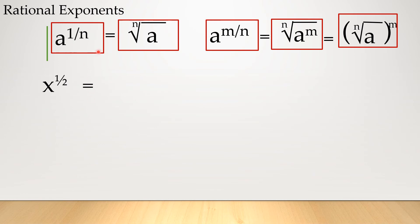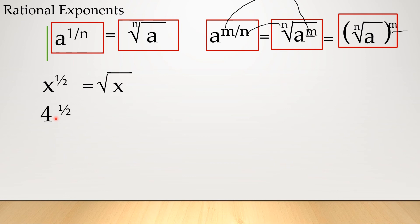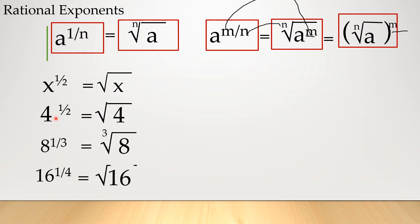So now let's look at examples. x raised to 1/2 is equal to the square root of x. 4 raised to 1/2 is equal to the square root of 4, which is 2. 8 raised to 1/3 is equal to the cube root of 8. And 16 raised to 1/4 is equal to the fourth root of 16. For the general form a raised to m/n, the m is the exponent inside the radical and n is the index.